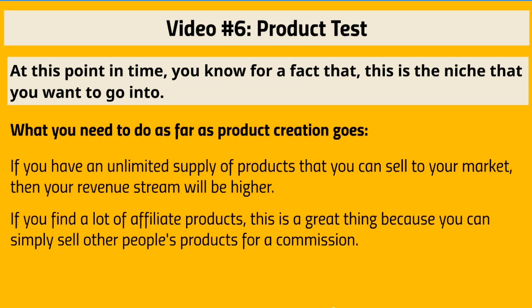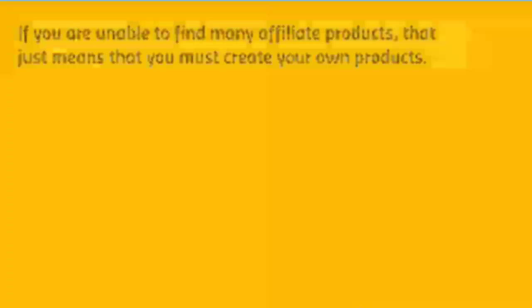If you create your own product, you get 100% commission. The nice thing about creating products is you own them entirely. A shortcut is private label rights products — someone has created a video course, report, or ebook and gives you the rights to put your name on it and make it your own. Their name is not on it, so you get all the credit. If you find a private label rights product in your niche like lowering cholesterol, you can compile an ebook or turn it into a video course, and get 100% of the revenue.